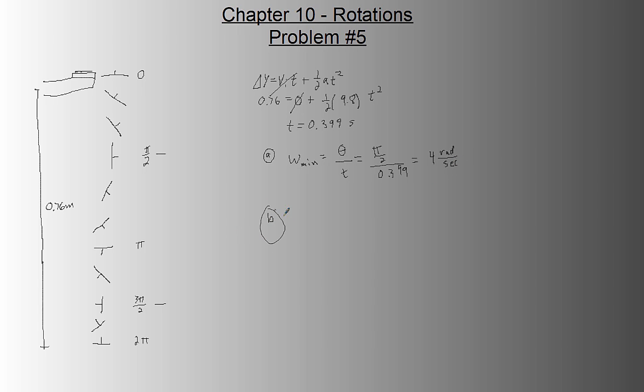Part B, the maximum is if it rotates three quarters of a revolution. W max equals theta over t, which is three pi over two over point three nine nine, and that gives you eleven point nine seven, basically twelve radians per second, so you gotta go a bit faster, like three times faster, which should make sense, because you're rotating three times as far. One half, two halves, three halves, and so, yeah, that should make sense. And that's the problem.